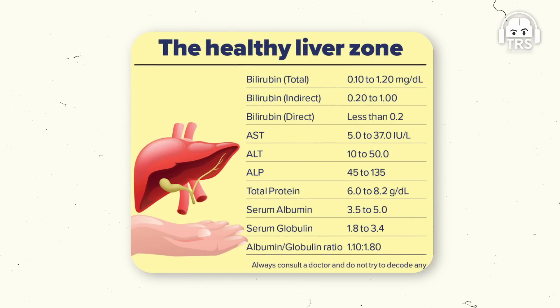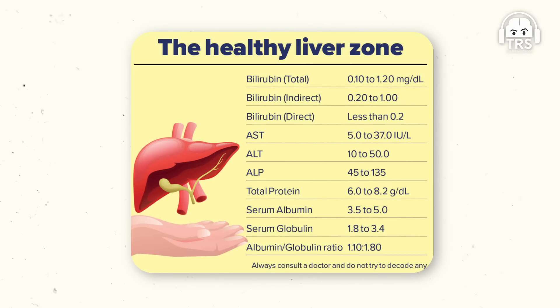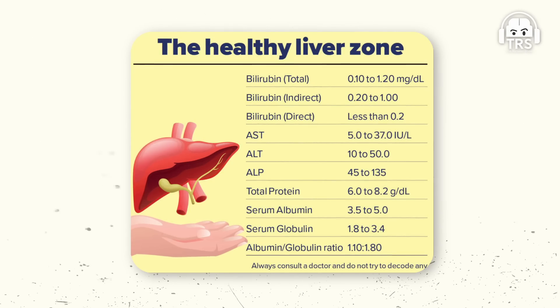Now if you look at a liver function test, there are various parameters: total bilirubin, direct bilirubin, and components known as AST and ALT — which are liver enzymes, also called SGOT and SGPT. You also have GGT and alkaline phosphatase. If these enzymes are elevated, especially AST and ALT, that means there is some damage happening to the liver cell, and then we call it fatty liver disease or steatohepatitis.